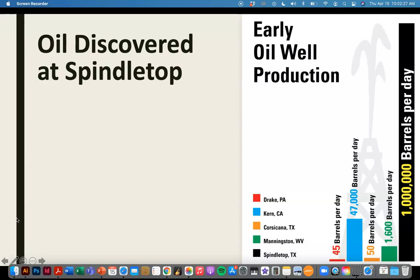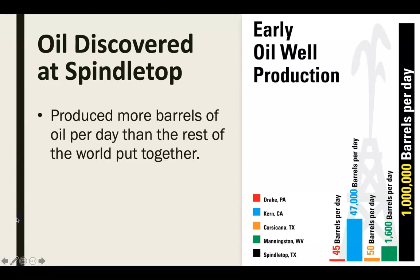You probably don't know what a barrel of oil is — a barrel of oil contains 42 gallons. So when we're talking about a million barrels of oil, we're talking about 42 million gallons of oil per day coming out of one well in a single day. That was just astronomical — no one ever believed there was that much oil to be discovered. The well at Spindletop produced more barrels of oil per day than the rest of the entire world put together.